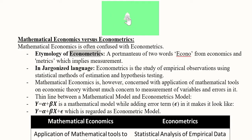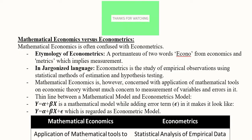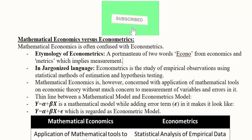If we try to do the etymology of econometrics, it is basically a portmanteau of two words: 'econo,' derived from economics, and 'metrics,' which means measuring something. So in this subject we are going to measure economic variables, which is why we call it econometrics.